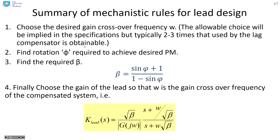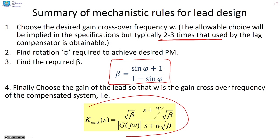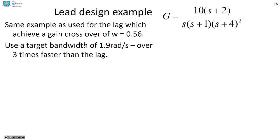To summarize the mechanistic lead design: choose the desired gain crossover frequency — typically faster than that used by the lag, otherwise what's the point. Find the required phase rotation phi, from that find the required beta using the formula, then plug all values into the formula for the compensator.